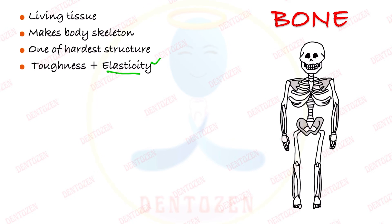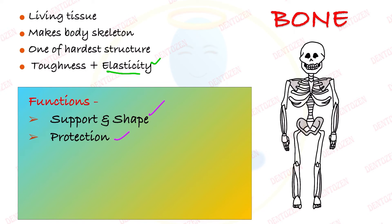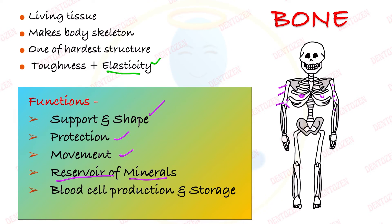What are its functions? Without bone there can be no support and shape to our body. It also provides protection to the organs of the body. It helps in movement as it provides attachment for muscles and tendons. It acts as a reservoir of minerals — whenever we need more minerals we can take from the bone. It also acts as a site of blood cell formation and storage.